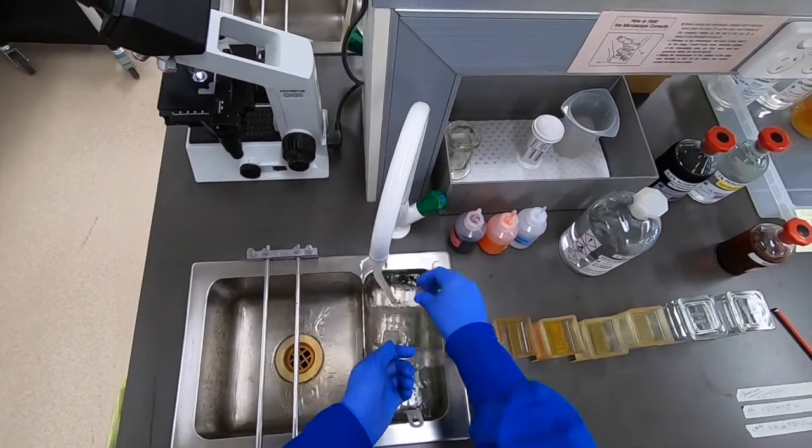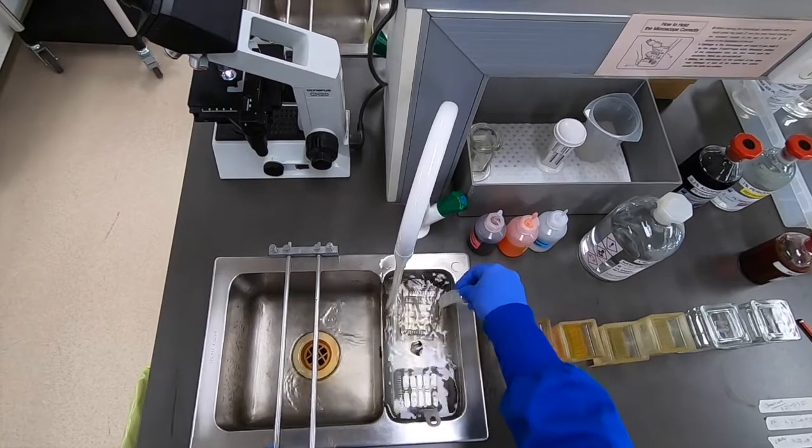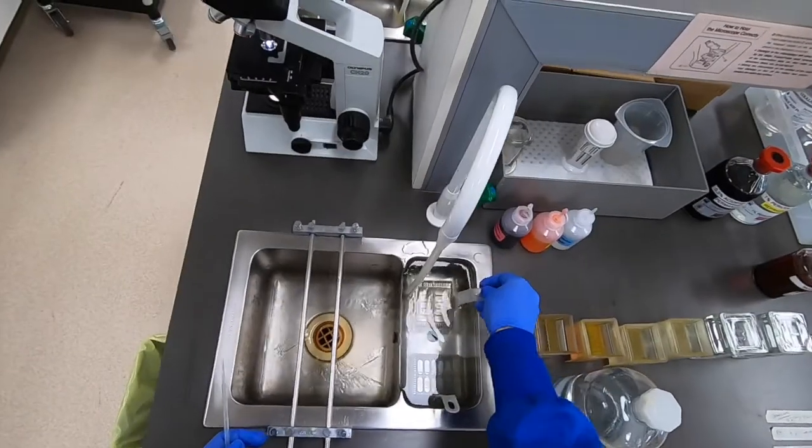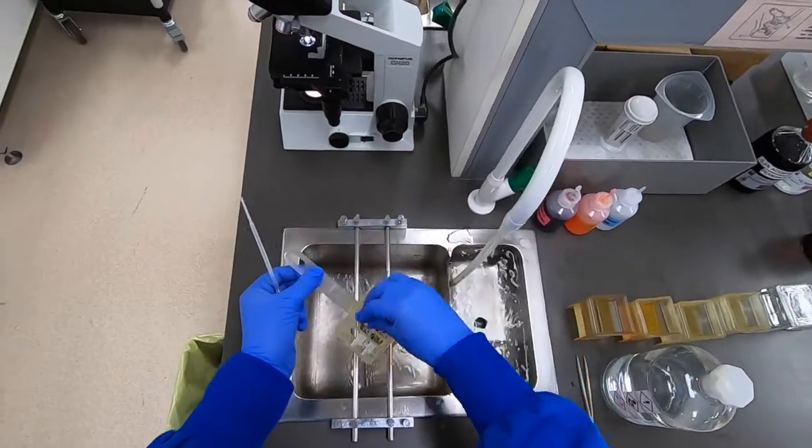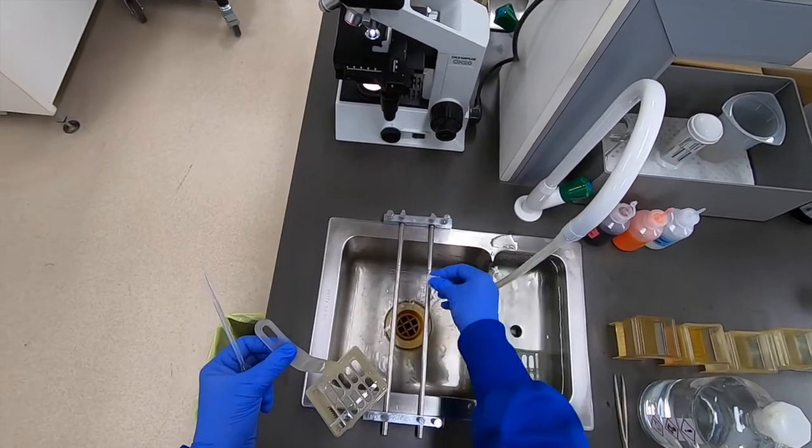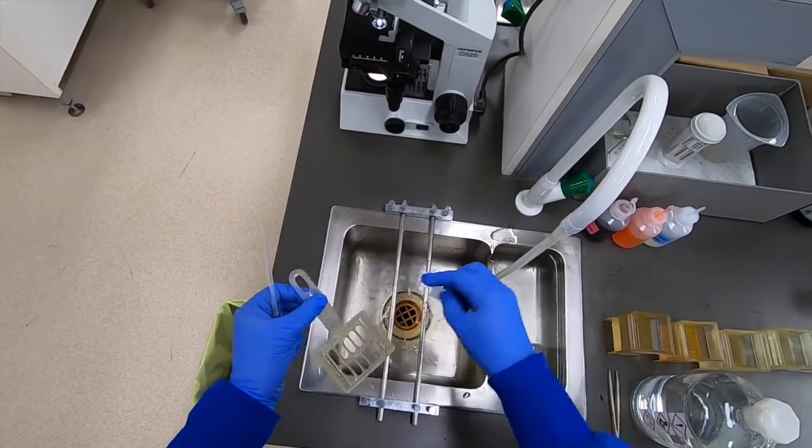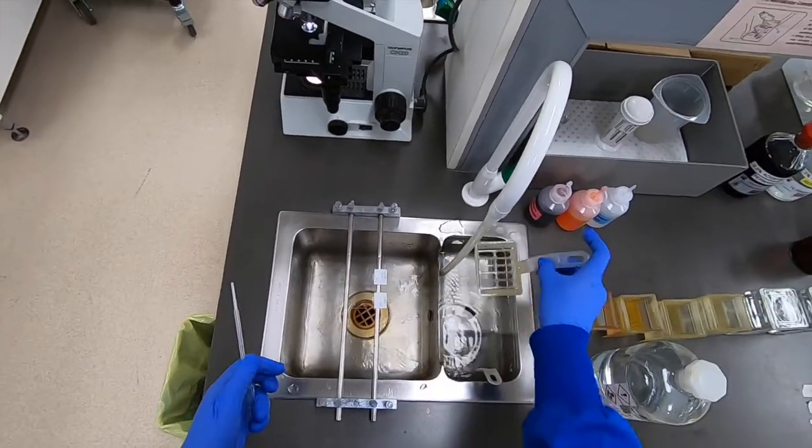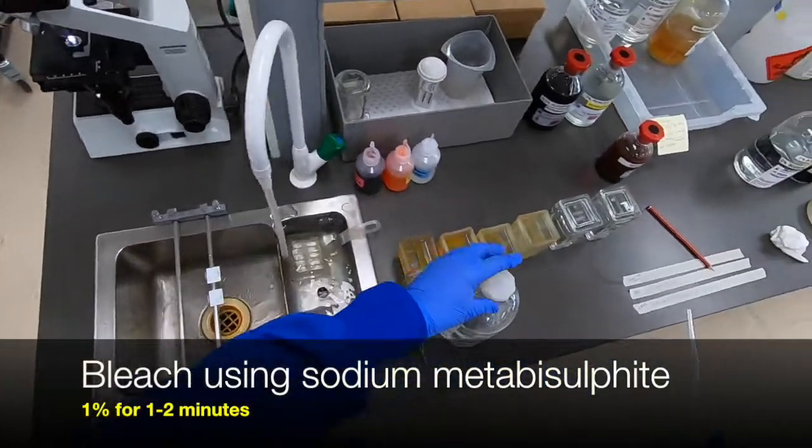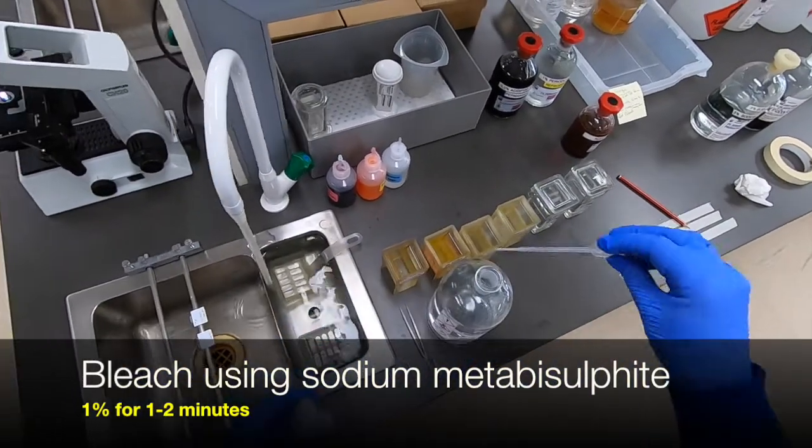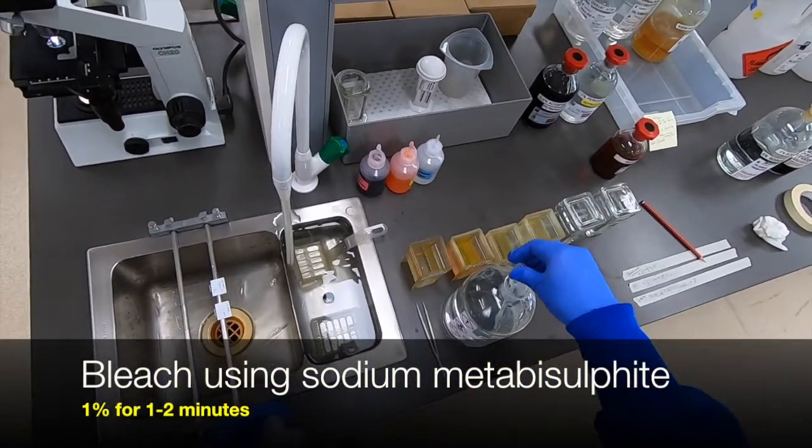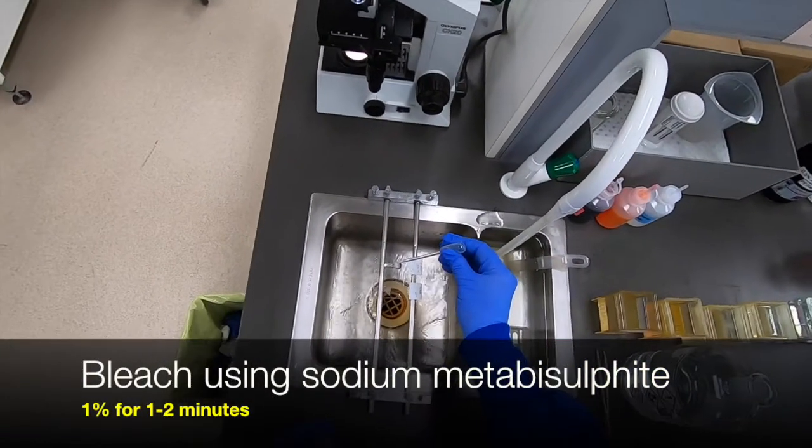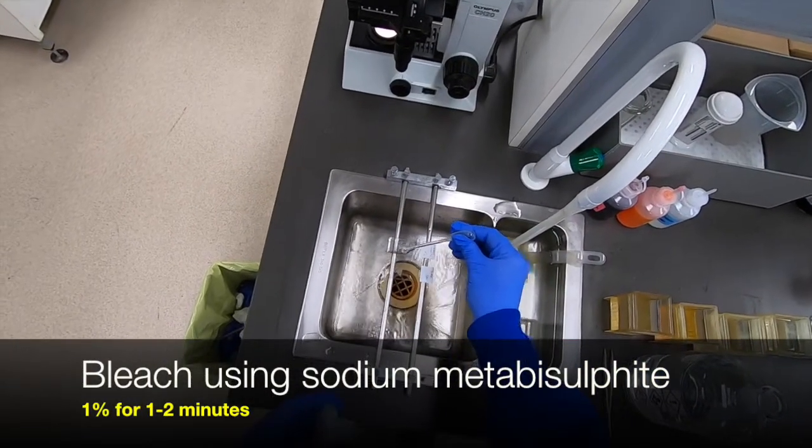And the traditional way of doing that is to treat the sections briefly in sodium metabisulfite. So to do that we simply just flick off the excess water from the slides as demonstrated here. And then we just simply put on the sodium metabisulfite and apply for a couple of minutes and that should be sufficient.